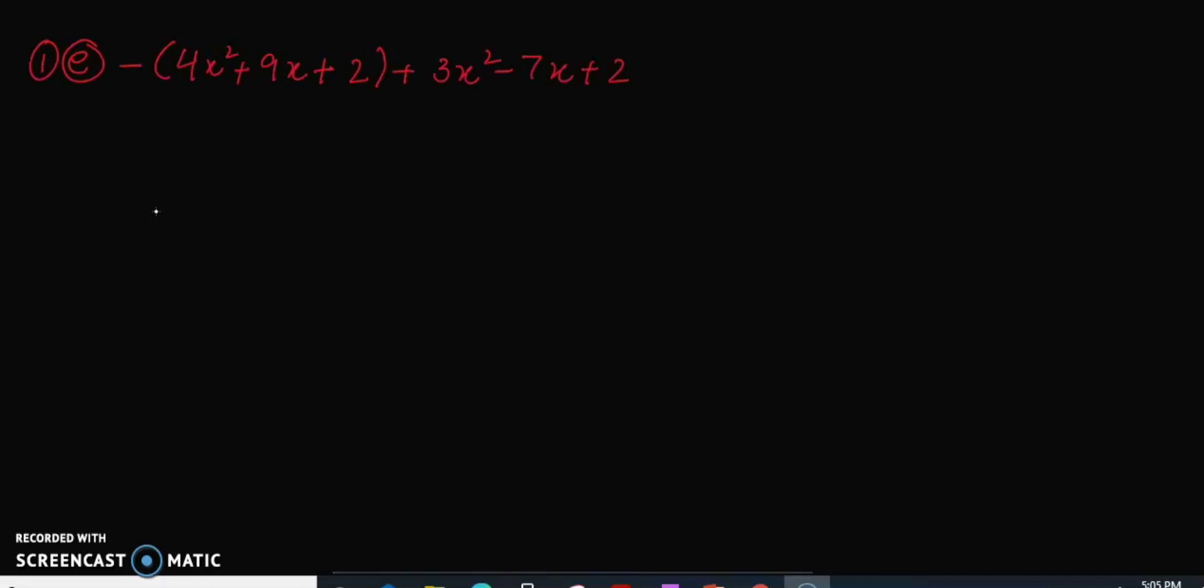Now coming to an interesting question, question number 1 and its E part. Here we have a long expression in parenthesis. So first of all, we will solve it. Now always remember that whenever there is a negative sign outside the bracket, it will go inside and multiply with each of the number. So now here we have positive 4x square, so plus minus minus we have 4x square, minus and plus when we multiply, we get minus. So we have 9x plus minus minus, and again we have negative 2. And the remaining expression will be written as it is.